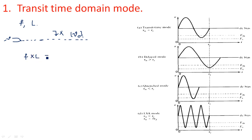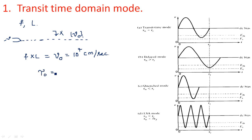In transit time domain mode, the product of frequency and length is equal to the standard velocity v₀, which is approximately equal to 10⁷ centimeters per second. In this mode, the transit time is equal to the period of oscillations — that is, τ₀ equals τ_t. The signal time period is equal to the time period of oscillations.